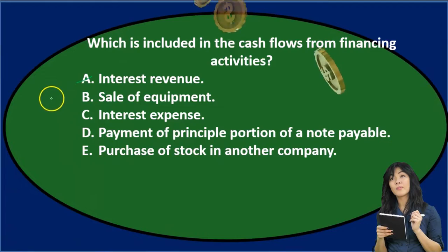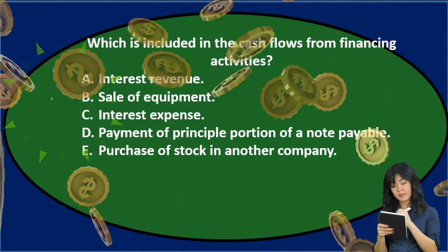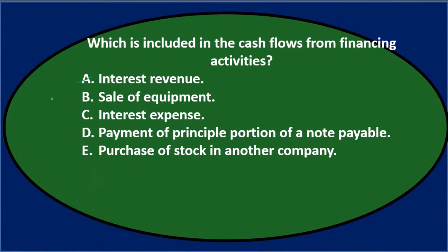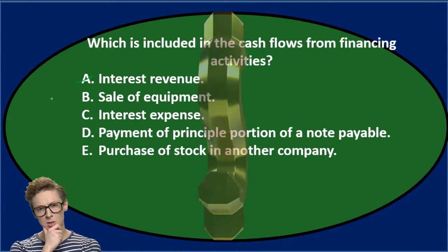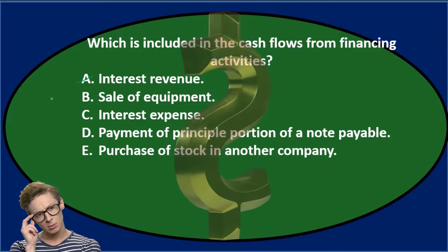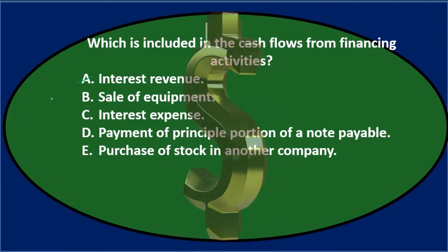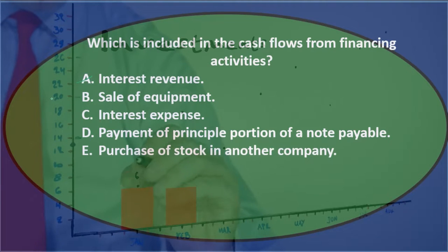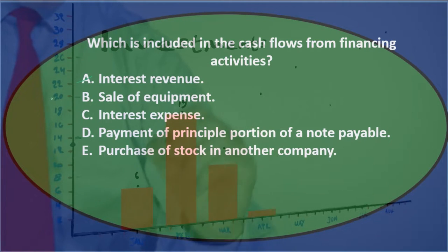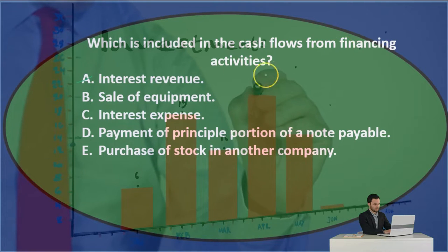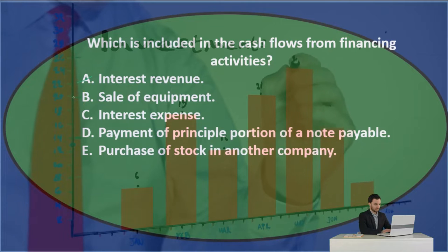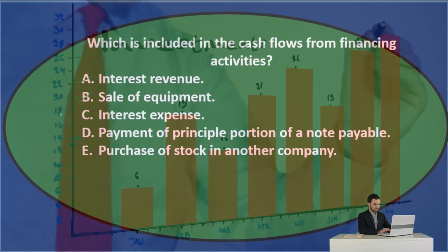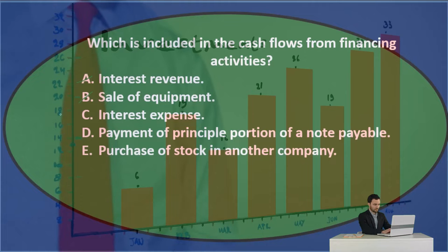B) sale of equipment — the journal entry would be debit cash, credit equipment, debit accumulated depreciation, and then a debit or credit to the gain or loss. There may be an income statement item with the gain or loss, but we're also dealing with equipment we sold. You would think that would be investing activities — we invested in the asset and we sold it — therefore investing activity, not financing.